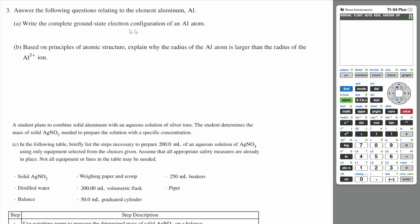write the complete ground state electron configuration of an aluminum atom. Aluminum in its ground state is going to have 13 electrons. So as long as you follow Aufbau principle, we should get this right. So 1s², 2s², 2p⁶, and then 3s², and then 3p¹. That is 13 electrons. So that's the ground state electron configuration.